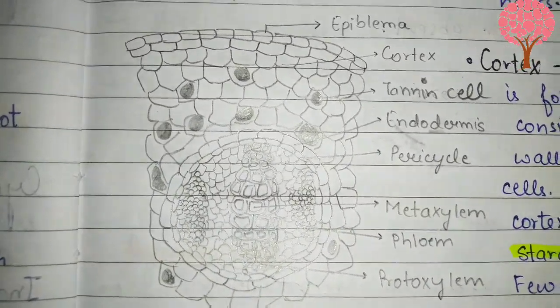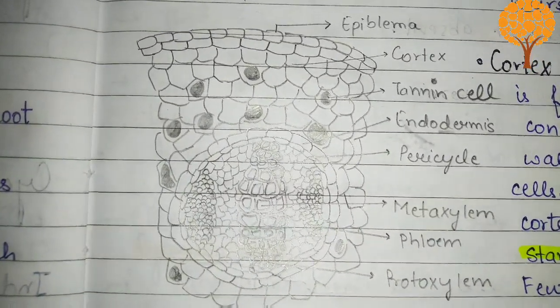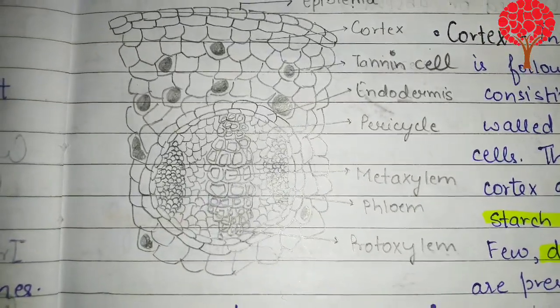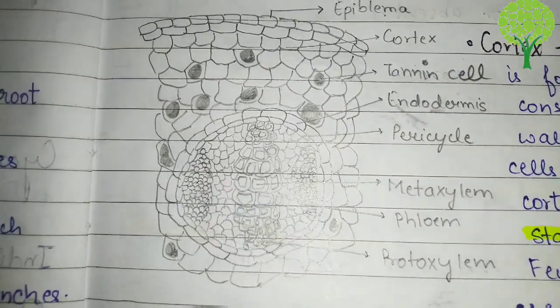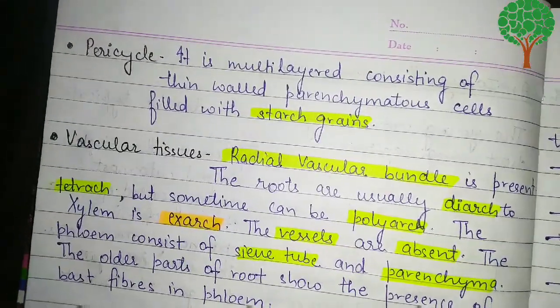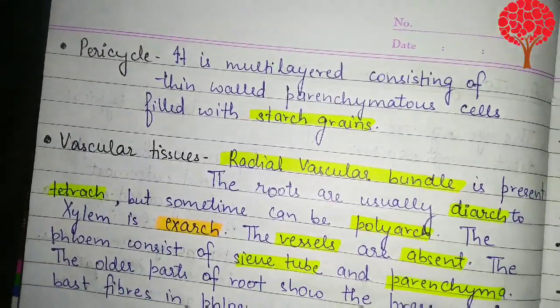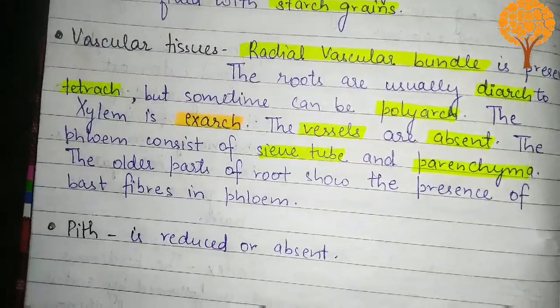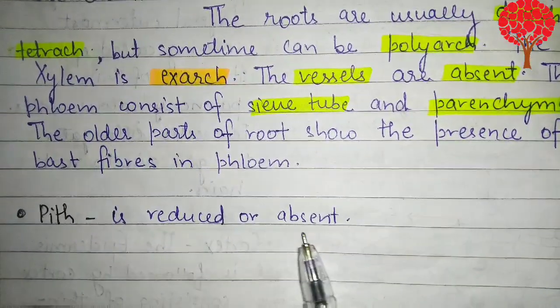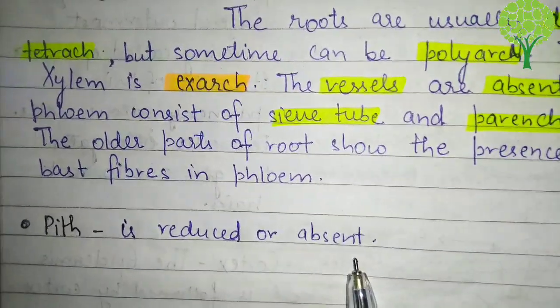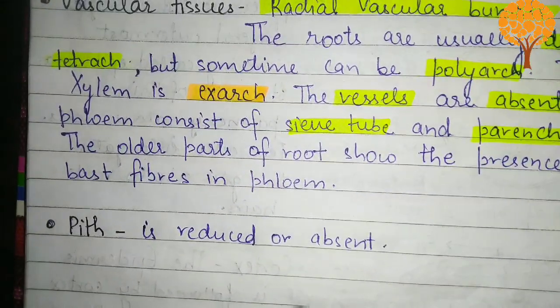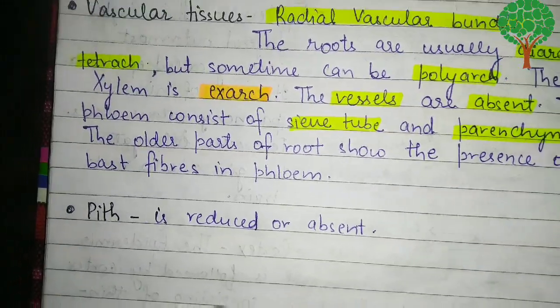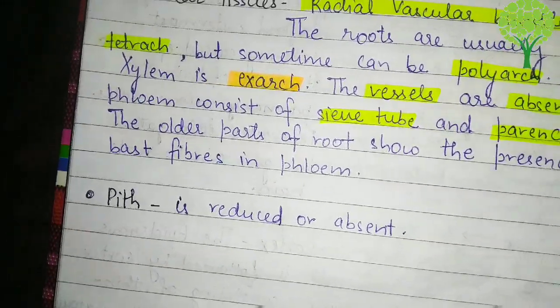Talking about secondary growth, it is similar to that studied in dicot angiosperms. Another thing is that the pith is reduced or absent. Regarding secondary growth, we can take the help of diagrams to understand it better.